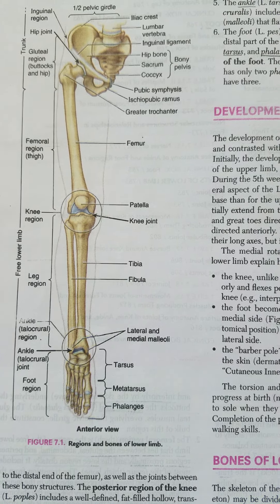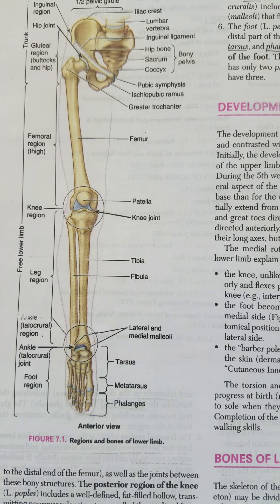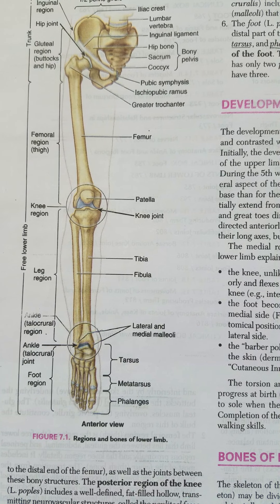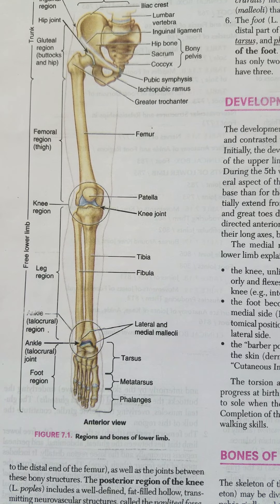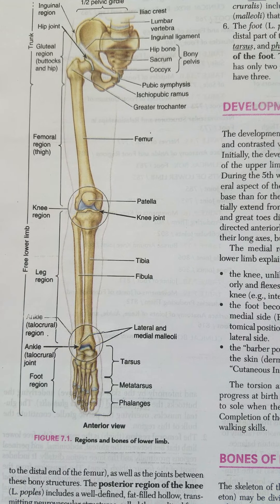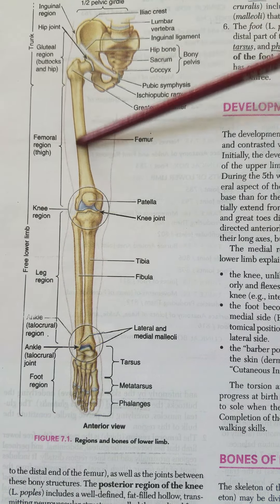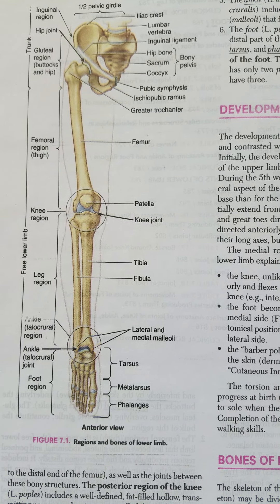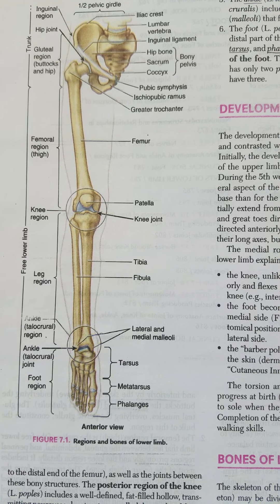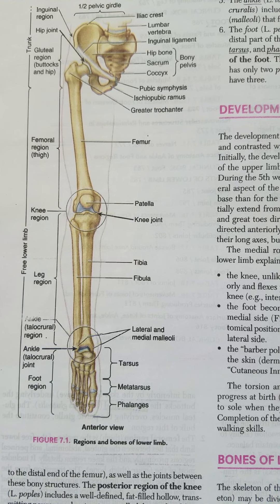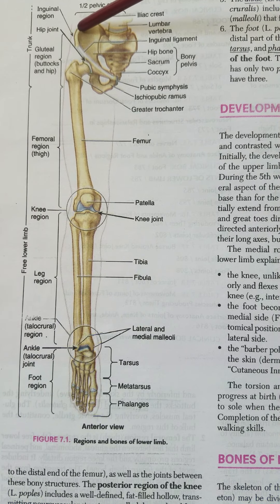Today we're going to start the next region: the lower limb. Before we start with the first bone, which is the hip bone, let's have an introduction to the arrangement of the various regions of the lower limb. We can divide the lower limb into six regions — it is specialized for locomotion and weight bearing.